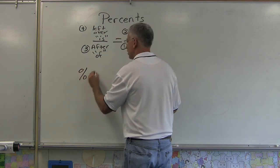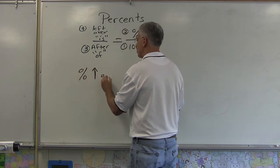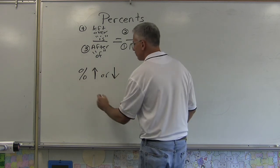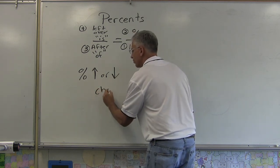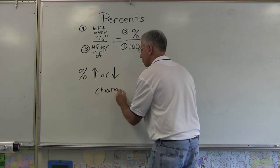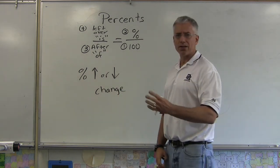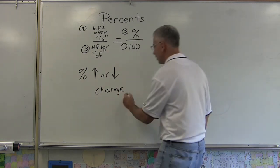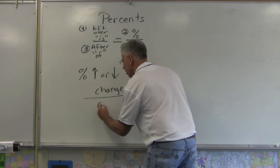You find the change between the two of them, and this is always your bottom number—always your original number, your starting point right there. So it's just change divided by original number.